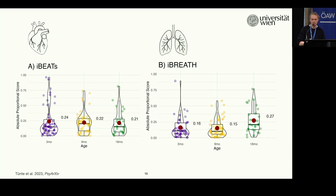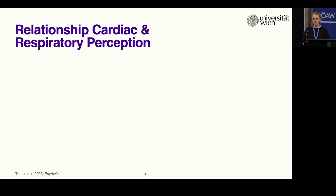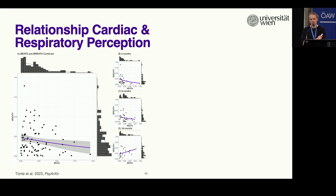So taken together, we find that infants — probably even at three months — can perceive their heartbeat and their respiration. However, respiration might develop over time, while heartbeat perception might stay rather constant. Next we wanted to see whether these two modalities are related to each other. What we find is that there is not strong evidence for a relationship between cardiac and respiratory perception in infants. There might be something at 18 months, but in general it does not seem to be very strong — which is consistent with research in adults and children, where there also is not a strong relationship between cardiac and respiratory perception.